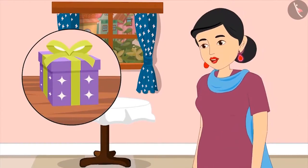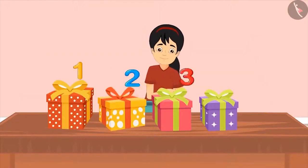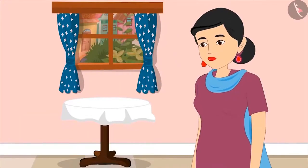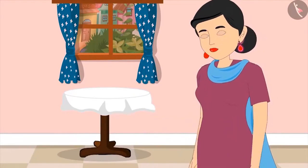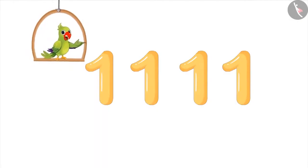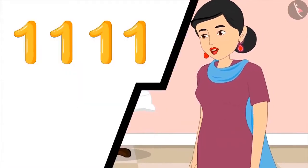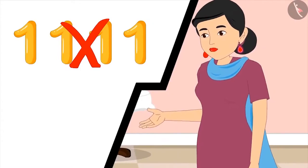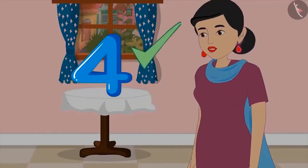Pinkie counts again: one, two, three, and four. This means I have got four gifts. Yes, this time you counted correctly — these are only four gifts. Now write down the number on this paper. Has Pinkie written four properly? Her mother says: we don't write four like that — you have written four times one. We write each number as a special symbol. Pinkie corrects herself and writes 4 properly. Very good, Pinkie, you have written four absolutely correctly.